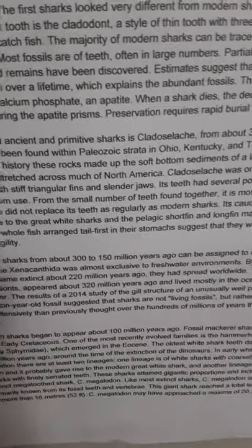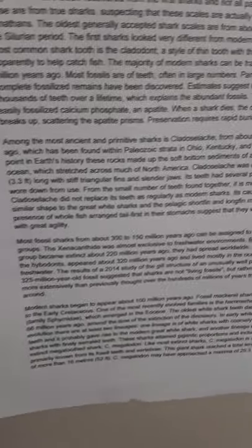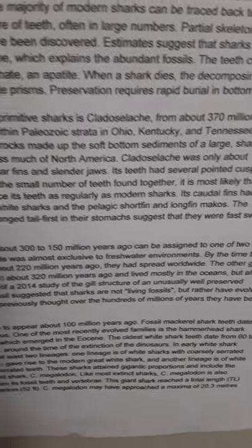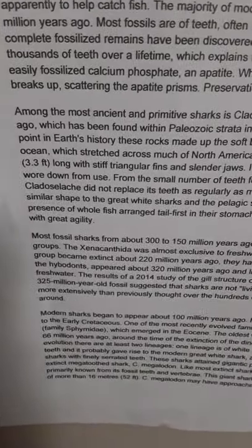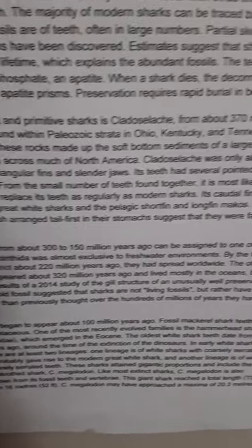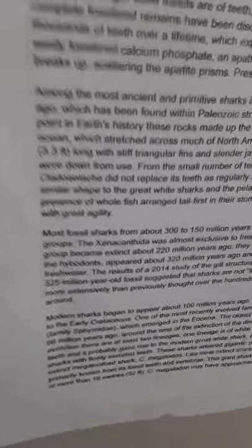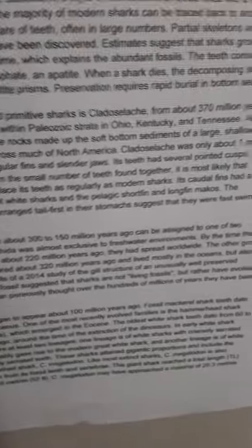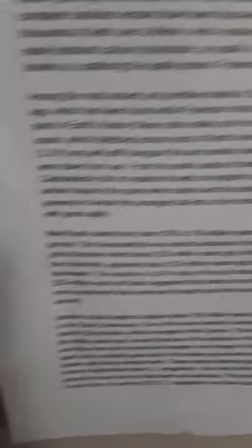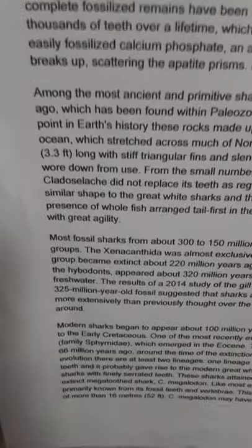Cladoselache was only about 1 meter, or 3.3 feet long, with stiff triangular fins and slender jaws. Its teeth had several pointed cusps, which wore down from use. From the small number of teeth found together, it is most likely that Cladoselache did not replace its teeth as regularly as modern sharks. Its caudal fin had a similar shape to the great white shark, and the pelagic shortfin and longfin makos. The presence of whole fish arranged tail first in their stomachs suggests that they were fast swimmers with great agility.